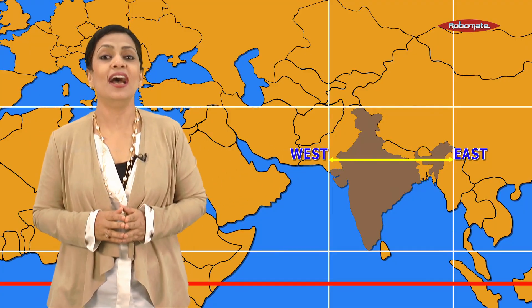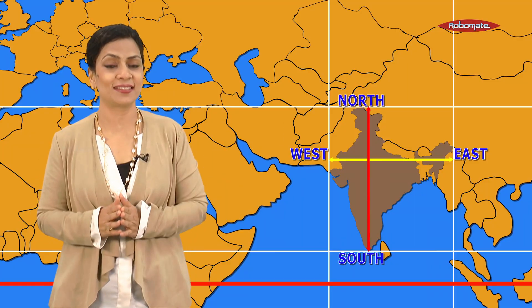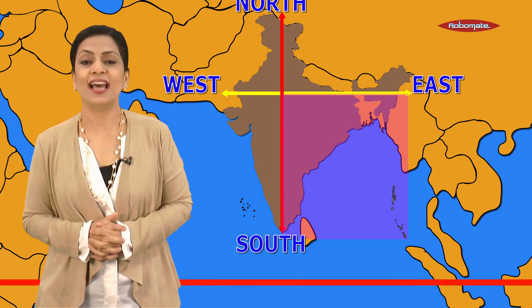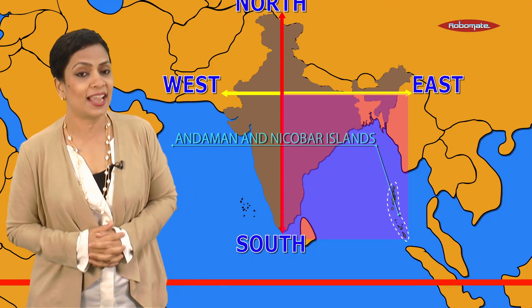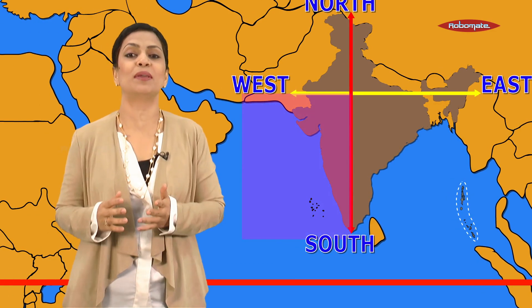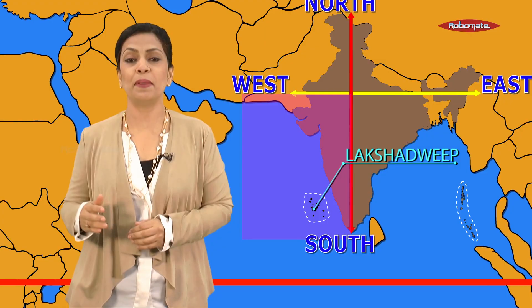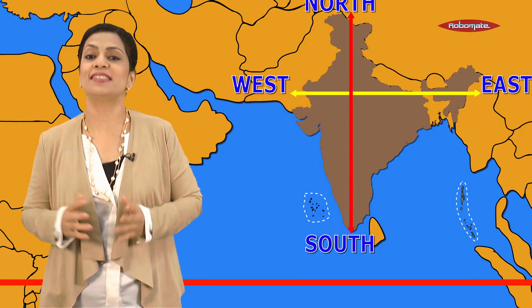Despite this fact, the east-west extent appears to be smaller than the north-south extent. To the southeast of the mainland lies the Lakshadweep Islands in the Bay of Bengal and Arabian Sea respectively.